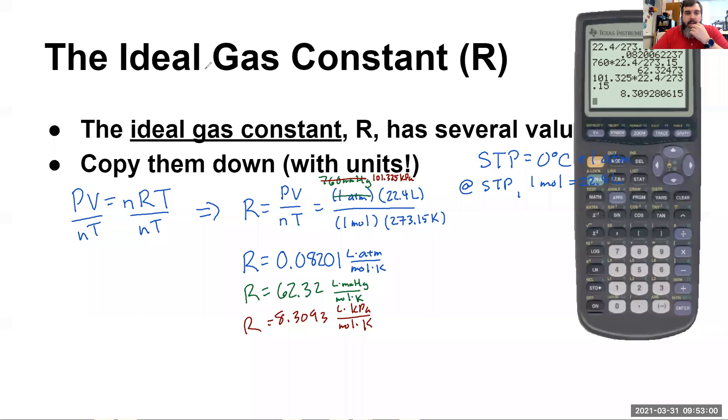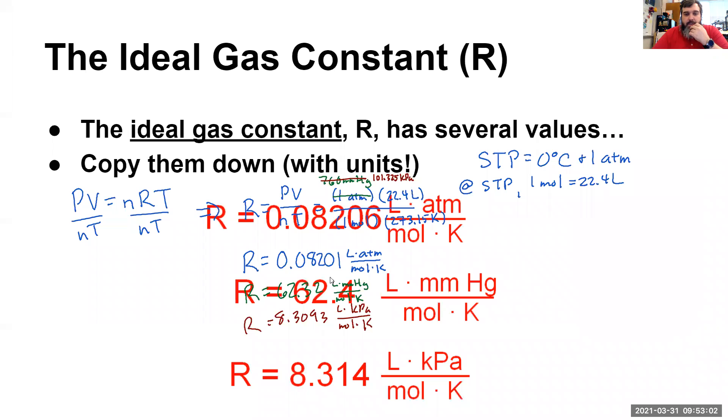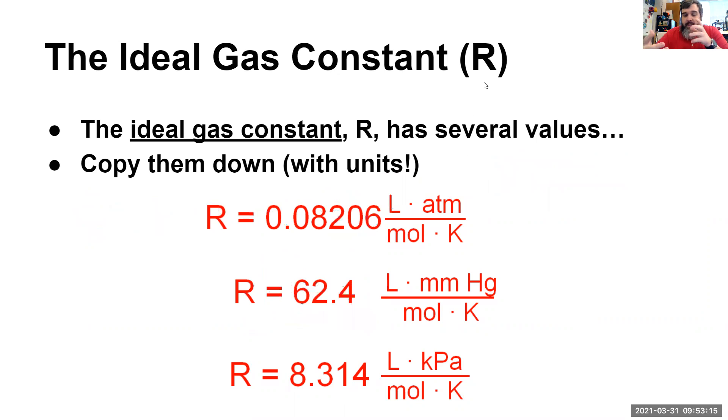Now, if you look at the actual values for this, you'll see it's 0.8206, 62.4, not 62.3, and 8.314. So my numbers are probably a little bit off. My values probably aren't as scientifically precise as what they have. But these are the three values, and that's where they come from, essentially.